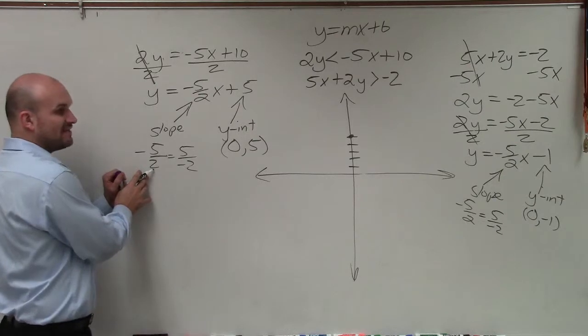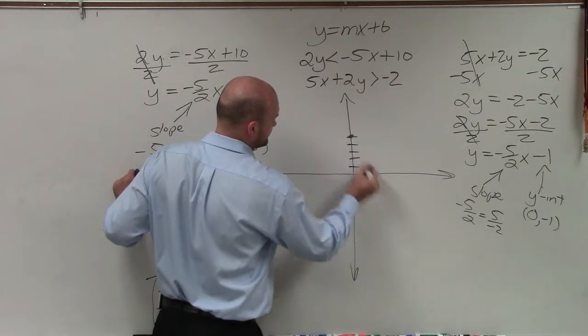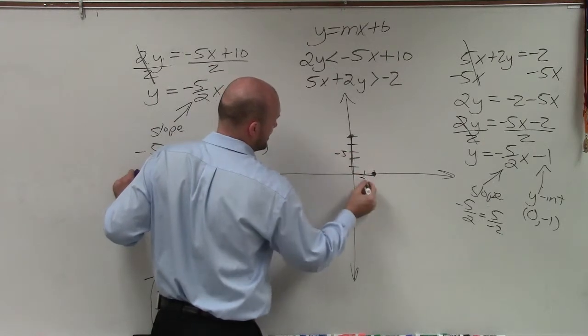And I'm going to, since the change in the x-values is positive 2, I'm going to go over to the right 2 units and create a nice little slope triangle.